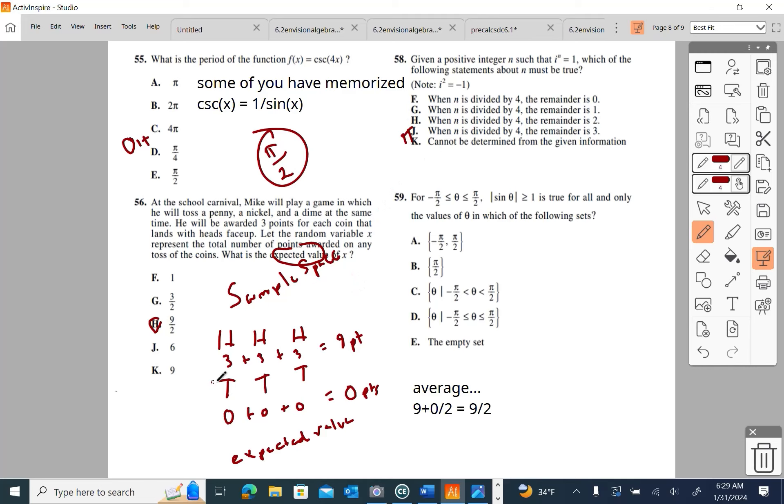Notice how they have that question written. The ACT is designed to be done without a calculator. So, there you go, choice H. Given a positive integer n such that i to the n is one, which of the following statements about n must be true? And they give you something very important. They give you what i squared is. Note that i squared is negative one. So, it says when n is divided by four, the remainder is zero. That's true. You know that i squared, they tell you that i squared is negative one.